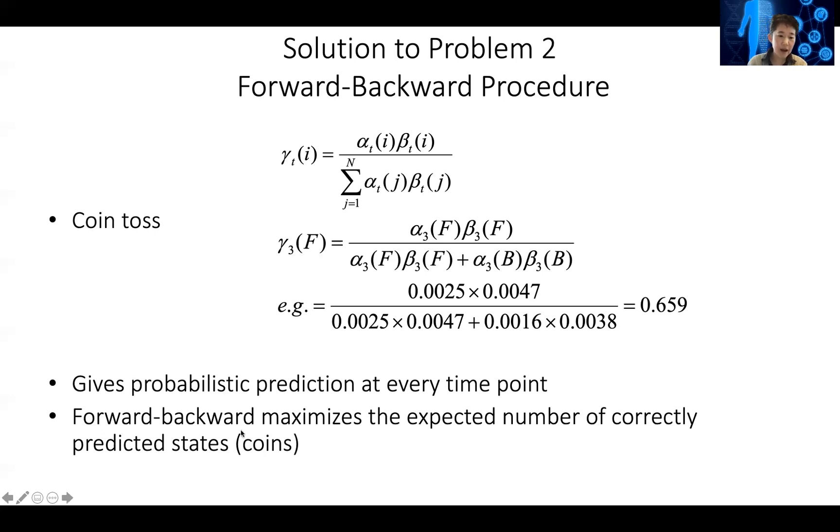The forward-backward procedure can maximize the expected number of correctly predicted states throughout the coin flip. If you have a very long string of coin flips, at every location you use all the information before and after, all the coin flips after and before, in order to make your best guess of what's the coin used at this location. If you use the forward-backward procedure, it will maximize your expected number of states at every coin flip that's correctly predicted. That's one solution to the second problem.